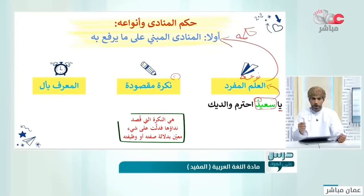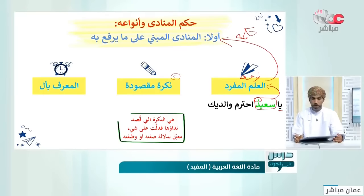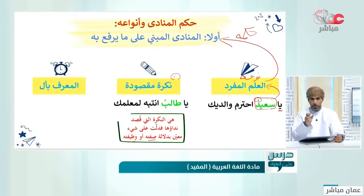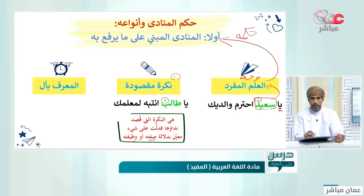يا طالب: أنا لا أعلم اسمه لكي أناديه بالاسم، إنما أناديه بصفته. وكذلك في السوق: يا تاجر، أو في الطريق: يا سائق، أو بدلالة وظيفته: يا مدير. النكرة المقصودة: أنا أقصد شخصاً معيناً لكن لم أناده باسمه لأنه لا علم لي باسمه، وإنما أناديه بدلالة صفته أو وظيفته. مثالها: يا طالب انتبه لمعلمك.